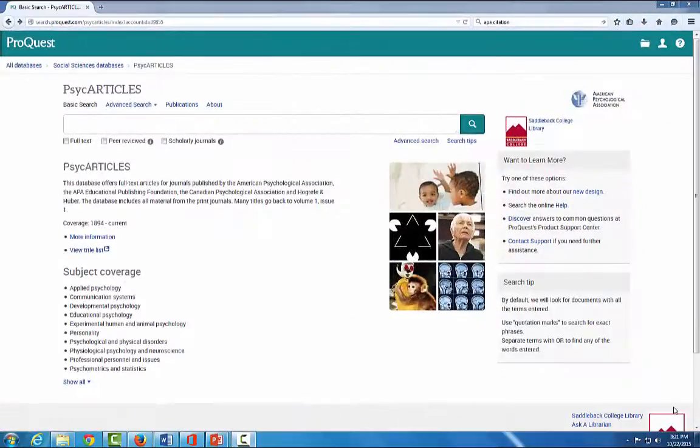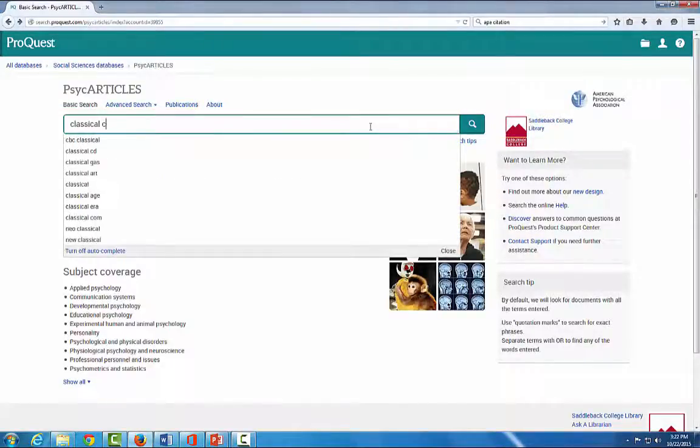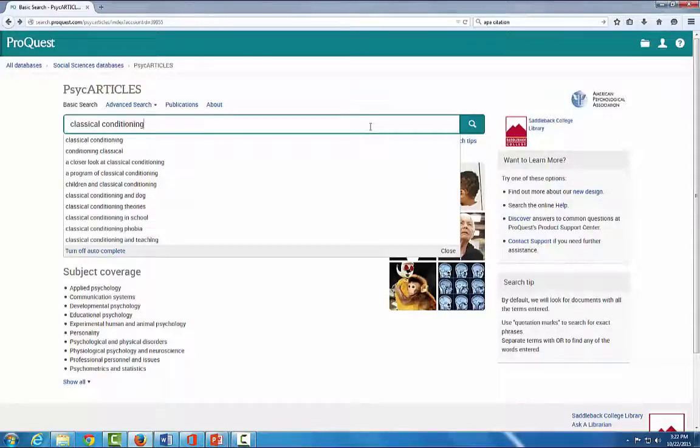In our class, we will be using the PsychArticles database at the Saddleback College Library website to find empirical research articles. This video will show you a shortcut for creating the reference list in the correct APA format.